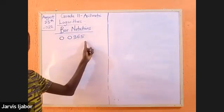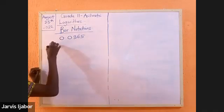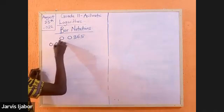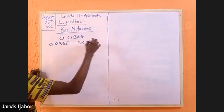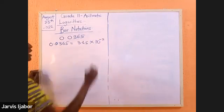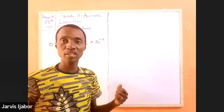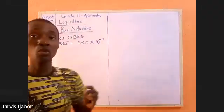Remember, this is our standard form pattern. We will first of all write this as 3.65 times 10 to the power of negative 2, suggesting that we're trying to make a small number look big.